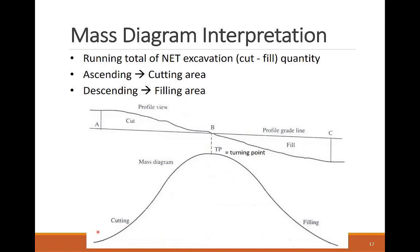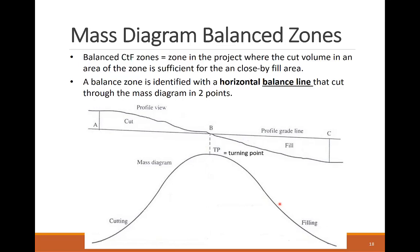Here, this is because we add the cut volumes to the mass ordinate, and deduct the fill volumes from the mass ordinate, as shown in the mass diagram table technique. Now we can visualize the balanced CTF zones where the cut volume is sufficient to balance the fill volume. We identify the balanced zone by drawing a horizontal line along the mass diagram and crossing it in two points, the balance lines. The balance line we draw here visualizes a CTF operation that's moving the dirt from the left cut segment to the right fill segment, while knowing the start and end points of the balanced zone, meaning point A and point C.